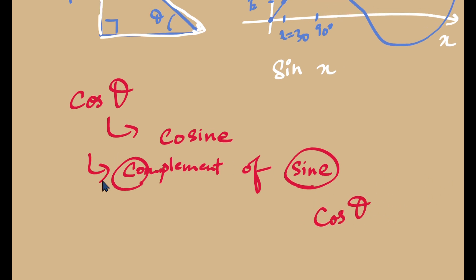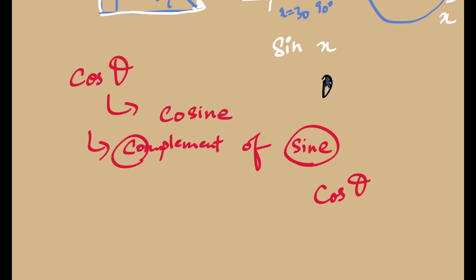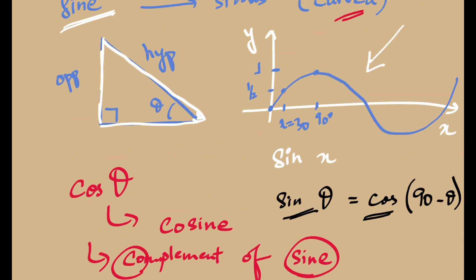And we studied this in our complementary angles chapter, if I'm correct. So we saw that if an angle theta and some angle 90 minus theta are complements of each other, then sine of theta would be equal to the cosine of 90 minus theta. We have seen this result. And this is the reason why sine and cosine are complements of each other and they are named so.